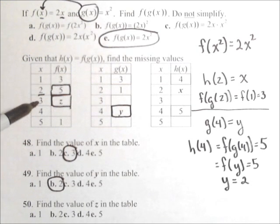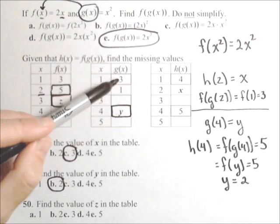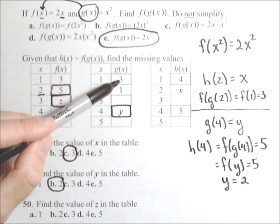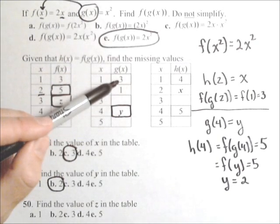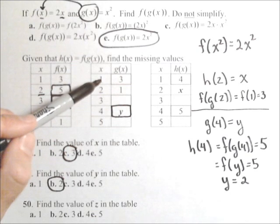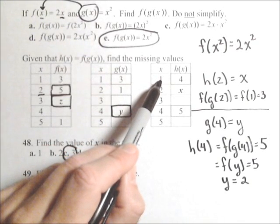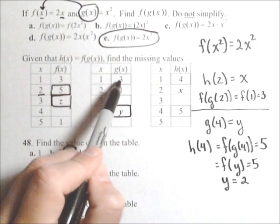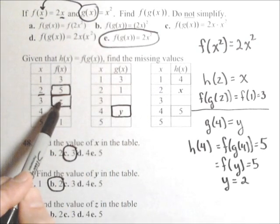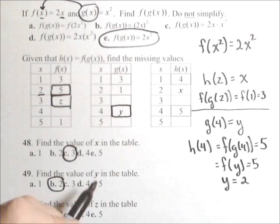In order to be putting 3 into f, that means we must be getting 3 from g. In order to be getting 3 from g, we need to be putting 1 in initially. That means we're starting at 1, which takes us to 3. 3 takes us to z, and our ending point should be 4.